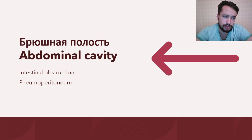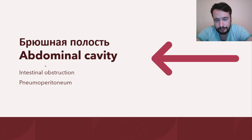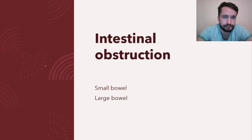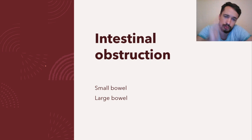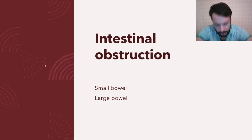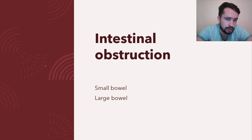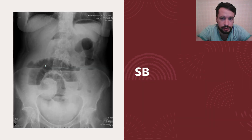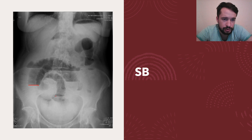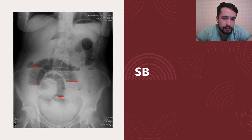We see that the space is decreased and we see many vessels on the lung near the abdominal cavity. When we talk about the abdominal cavity, the most interesting diseases for us are intestinal obstruction and pneumoperitoneum. When we talk about intestinal obstruction, we need to divide it into small bowel and large bowel obstruction. When we deal with small bowel obstruction, we will see horizontal lines — these horizontal lines we call cups of Kloiber.